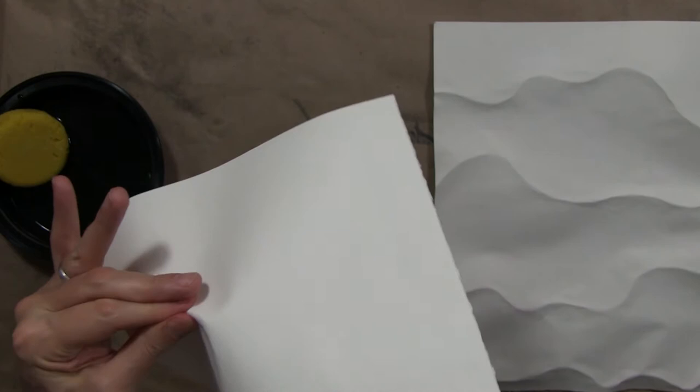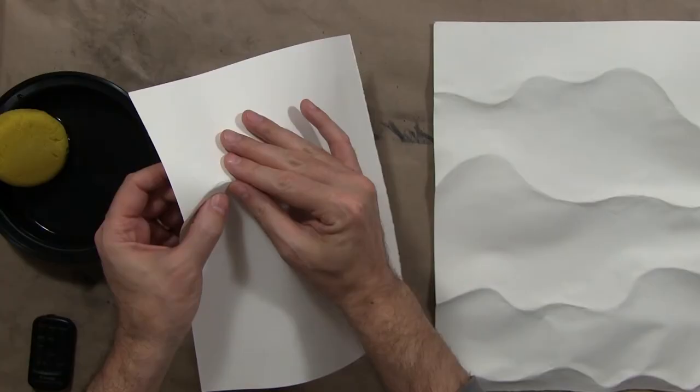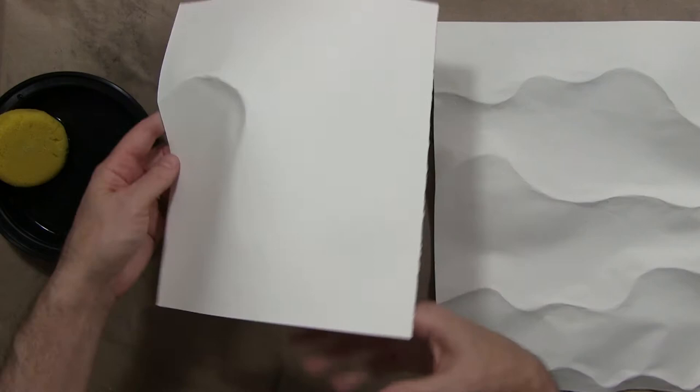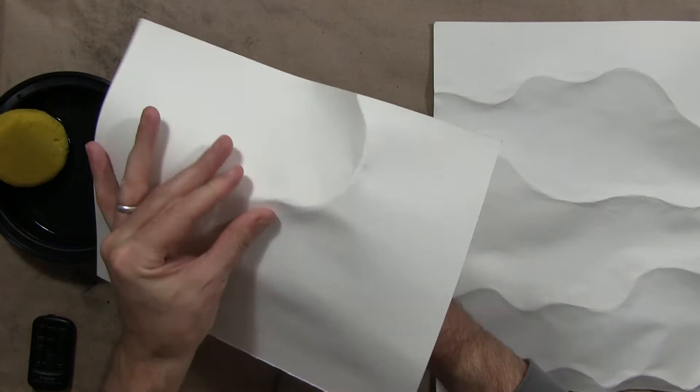Then start pinching once it's sort of relaxed into a curve. And then when we go to straighten out or turn the curve the other way, don't be afraid to flip the paper around to whatever way feels natural.